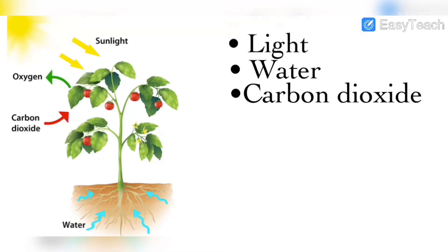These three materials are required by the leaves to make food for the whole plant. First is light — the leaves get light directly from the Sun. Next is water — plants get water from the roots, because when we water the plants or when rain comes, the water travels from the roots to the stem and then to all parts of the plant. Then comes carbon dioxide — we release carbon dioxide, so plants get carbon dioxide from that.